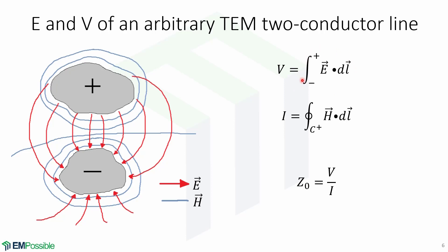In this case, the voltage is defined as the line integral of the electric field, the current is defined as the closed contour integral of the magnetic field, and the impedance is defined as the ratio of voltage to current.